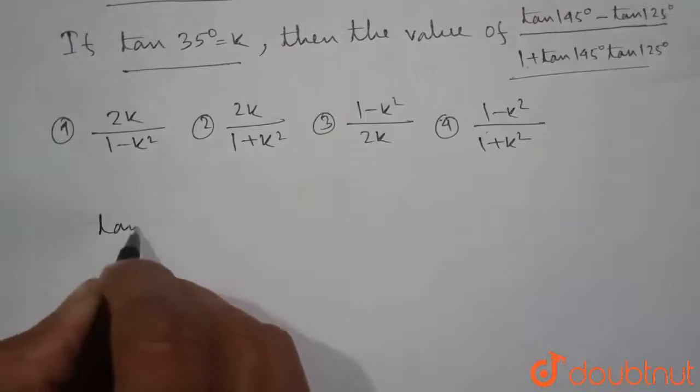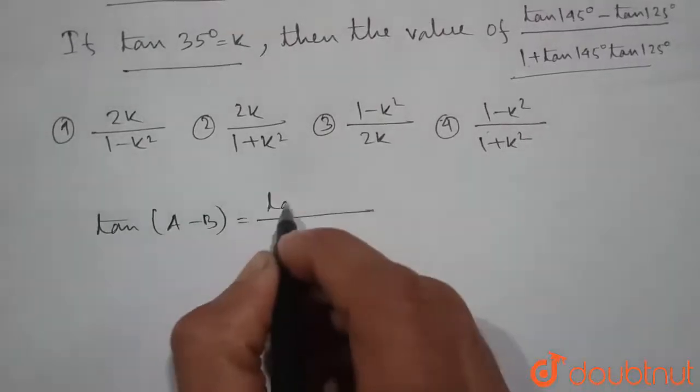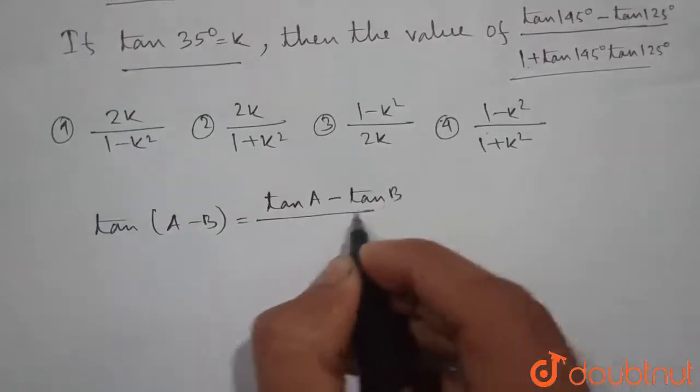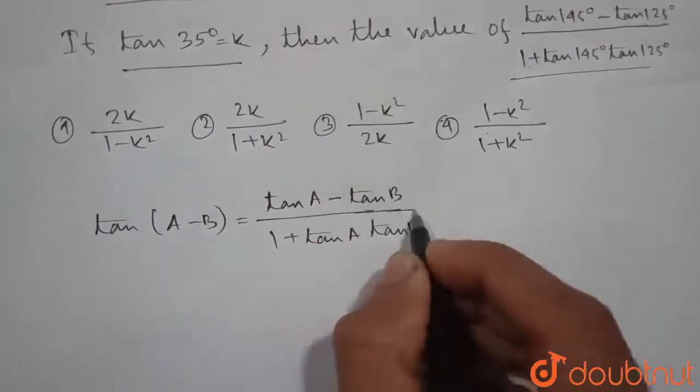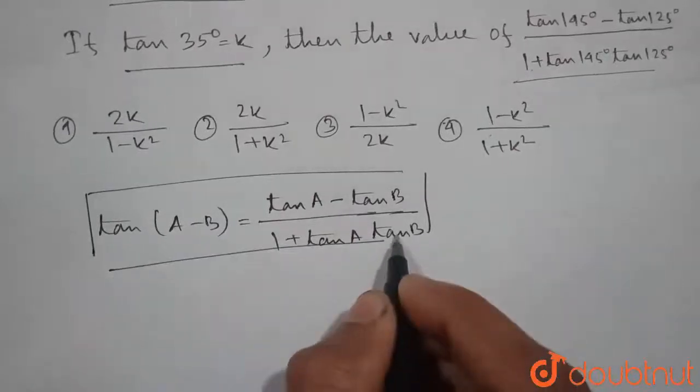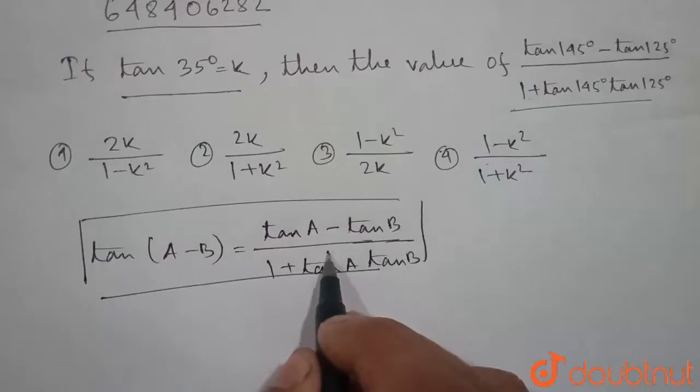We know that tan of A minus B is equal to tan A minus tan B, divided by 1 plus tan A into tan B. So this is our formula. Looking at the formula, if you see the question here, it is same as the right hand side.